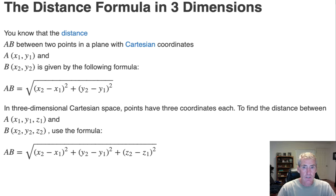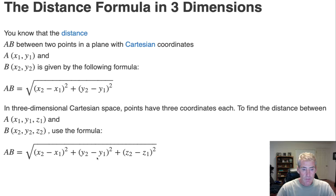First let's take a look at the distance formula. When you are working in two dimensions you only have x and y. When you're in three dimensions you have x, y, and z. Notice that the distance formula is very similar — you subtract the x's and square it, subtract the y's and square it, take the square root, and you get the distance between two points.